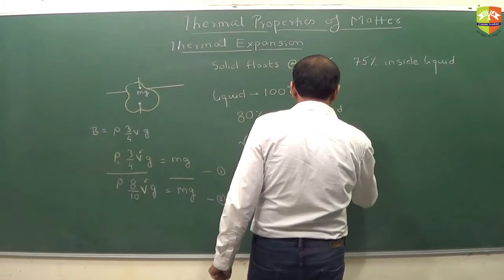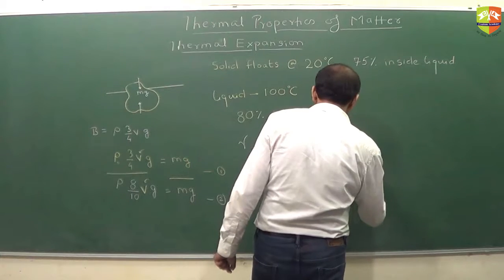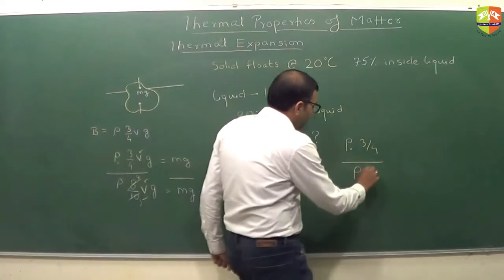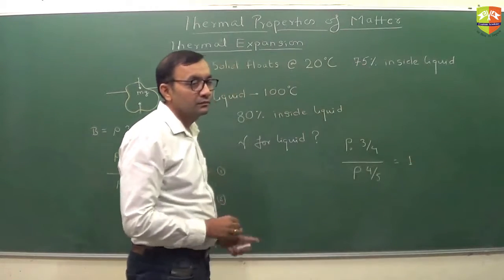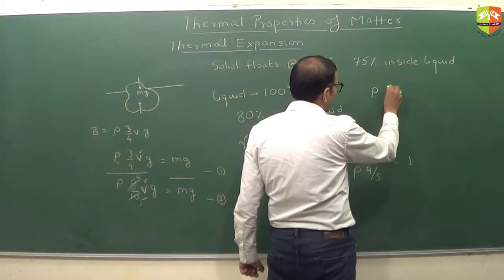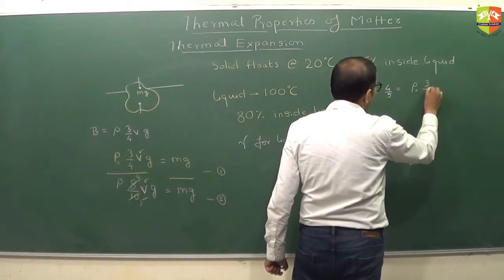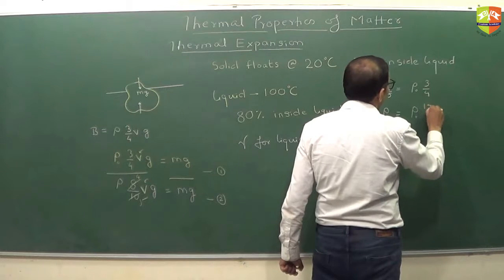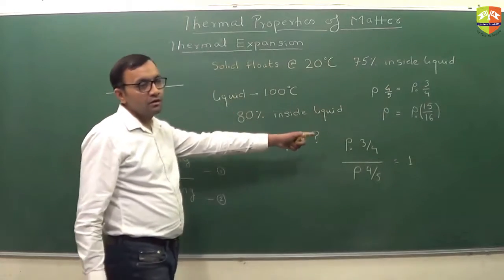You will get rho0 into 3 by 4 divided by rho into 4 by 5 is equal to 1. From here, you will get rho into 4 by 5 equal to rho0 into 3 by 4. So rho will be equal to rho0 into 15 by 16.